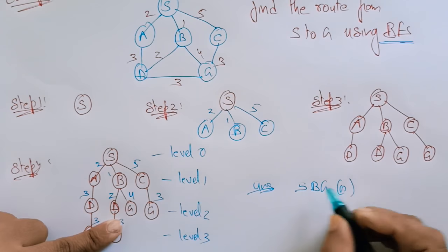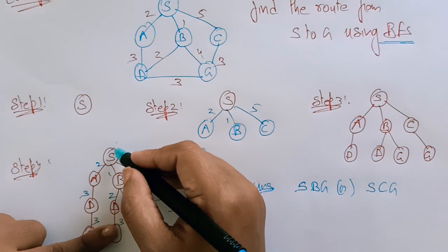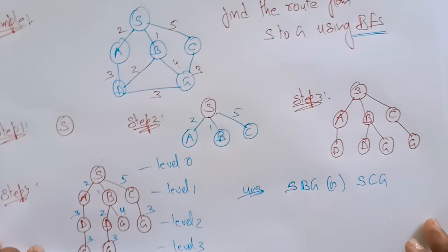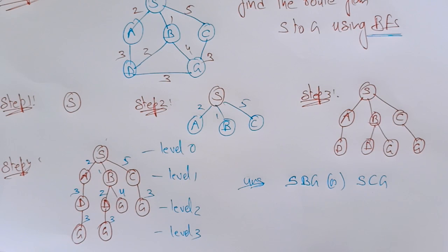This is the way you need to find the route from the root node to the goal node. From root node to the goal node.